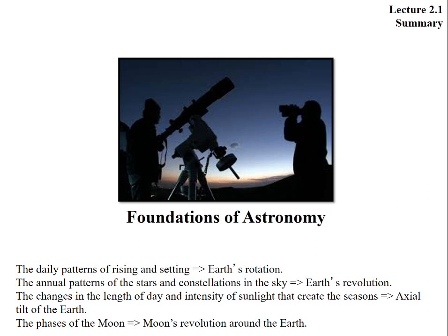The summary of today's class: daily patterns of rising and setting are due to Earth's rotation. Annual patterns of Sun and constellations in sky are due to Earth's revolution. The change in length of day and intensity of light that creates seasons is due to axial tilt of the Earth. The phases of the Moon are due to the Moon's revolution around Earth.